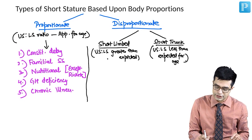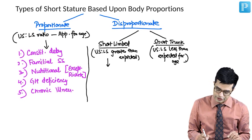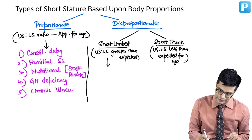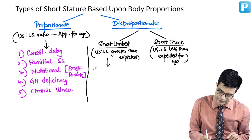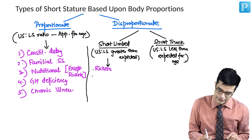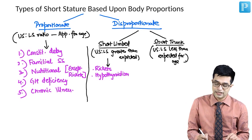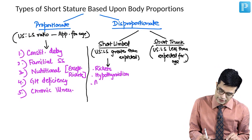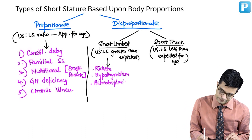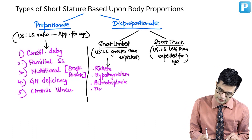Short-limbed short stature is commonly seen in patients with rickets. It is also seen in untreated congenital hypothyroidism, especially congenital untreated hypothyroidism. It can occur in achondroplasia and in Turner syndrome.